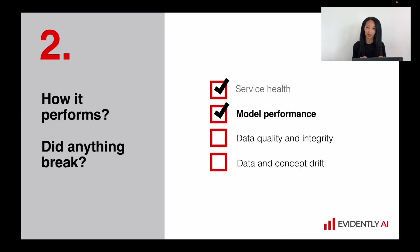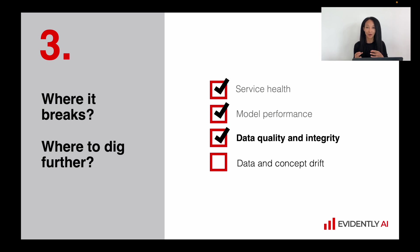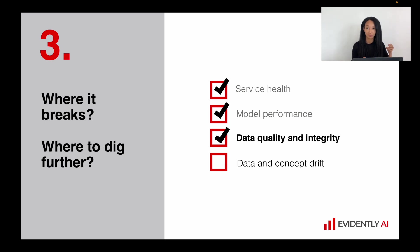Pretty often we do not have ground truth right away. There is some delay between the moment we generate a model's output and the moment we get the ground truth. So it's not always possible to calculate quality or error-based metrics. In this case, we can use a proxy. In most cases, when something is wrong with the model, it's because there are issues with input data. So if we implement data quality or data integrity metrics, in most cases we can catch and fix these issues.